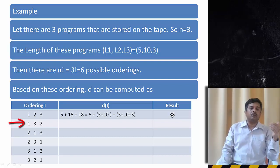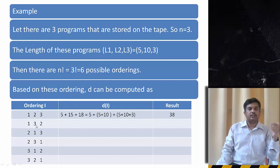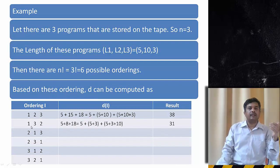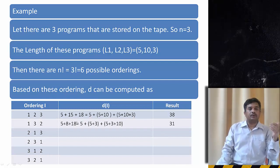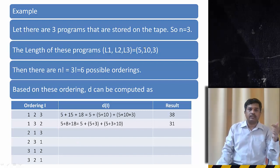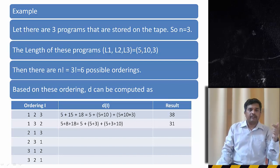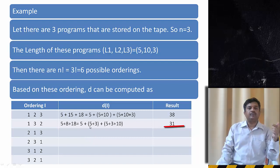Similarly, if I follow the order first then third then second, then what is happening? For the first program, it will not take more than 5 units of time. For the third program, it has to traverse the first program and after that it will go to the third program. So 5 plus 3, so 8 units of time is required to retrieve the third program. And at last if you will retrieve the second program, 5 plus 3 plus 10, that is 31 units of time.